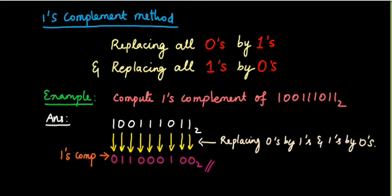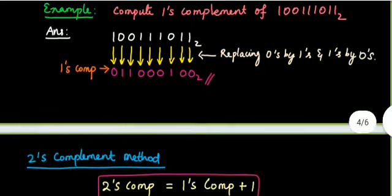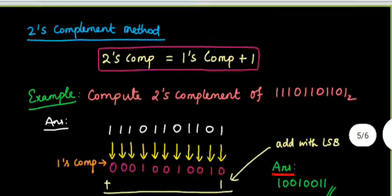From this what you understand? Wherever I have one, I am putting zero. Wherever I have zero, I change it into one. Now I got one's complement value. We will see the two's complement method in the next slide.